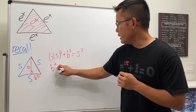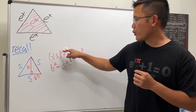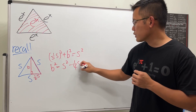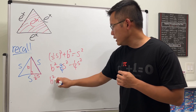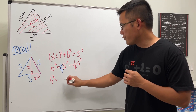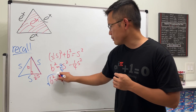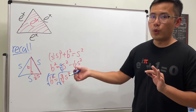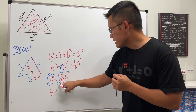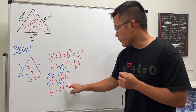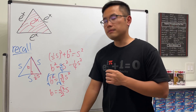Solving for b: b² = s² − (1/2)²s² = s² − (1/4)s². Getting a common denominator gives b² = (4/4)s² − (1/4)s² = (3/4)s². Taking the positive square root (since we're doing geometry): b = (√3/2)s.